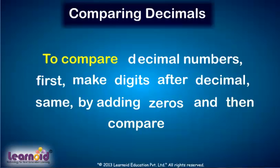To compare decimal numbers, first make the digits after the decimal the same by adding 0s, and then compare.